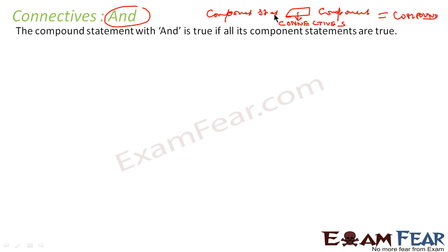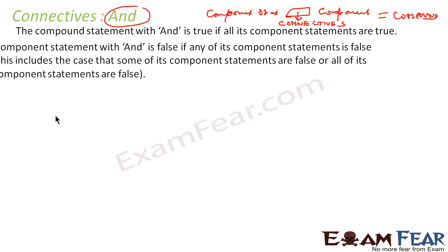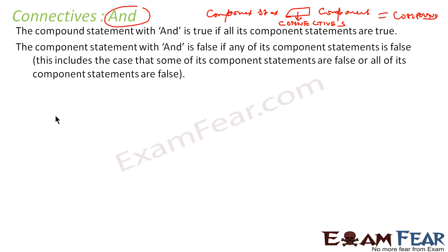Connectives can be AND or OR. So the first connective is AND. If you are using connective AND to connect two statements, then the compound statement will be true if and only if all the component statements are true. And even if a single component statement is false, the compound statement will be false. We'll take some examples.